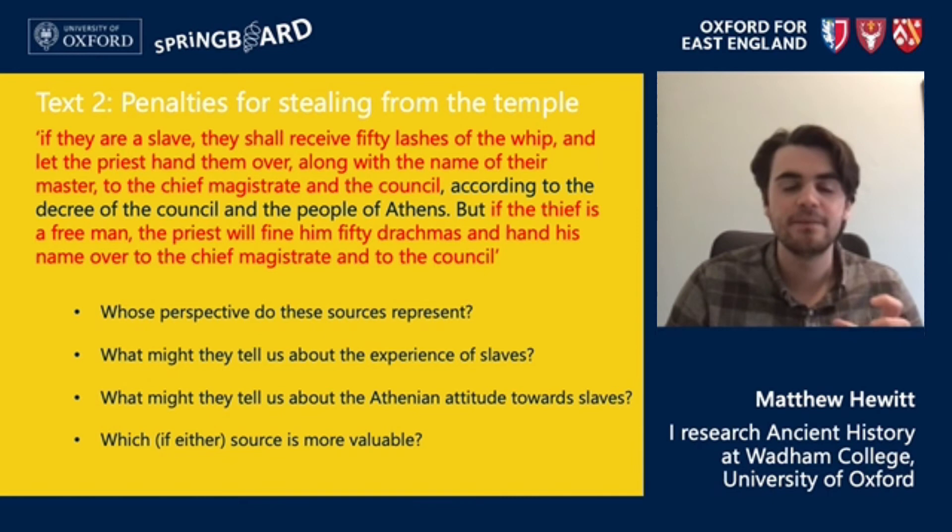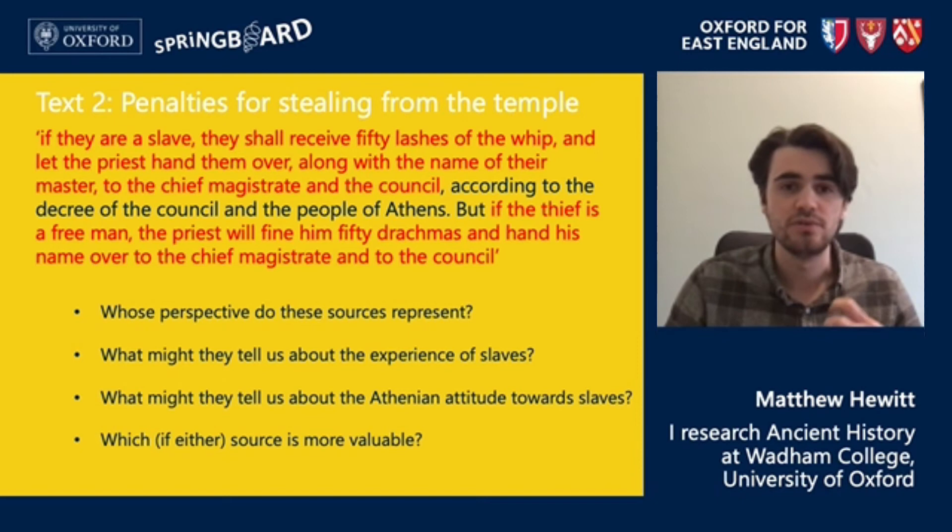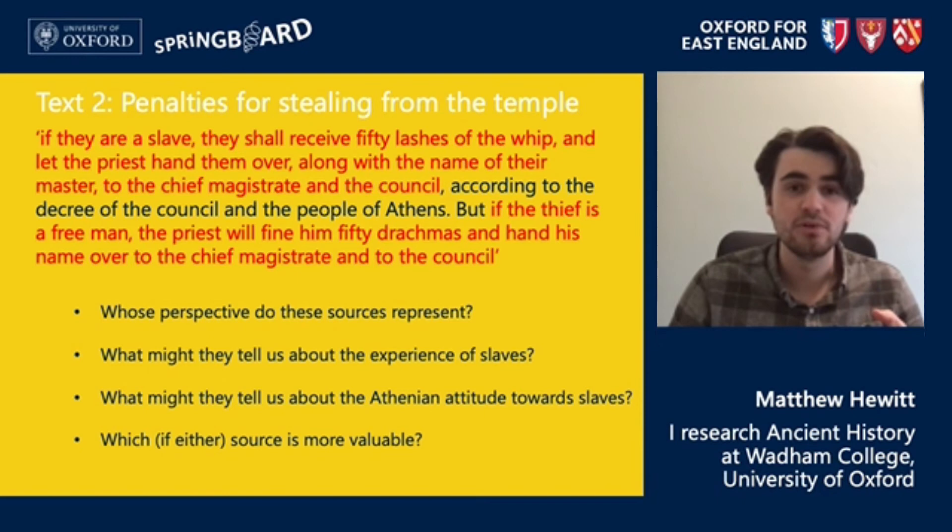Think again about these questions — perspective, what these texts tell us about the experience of slavery and the Athenian attitude towards slavery — and think about it in relation to the previous inscription. Which source is more or less valuable, and in what ways are they interesting but different?